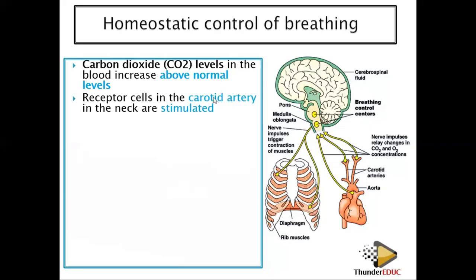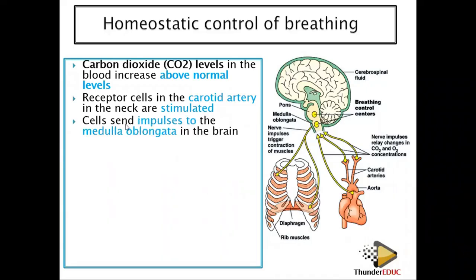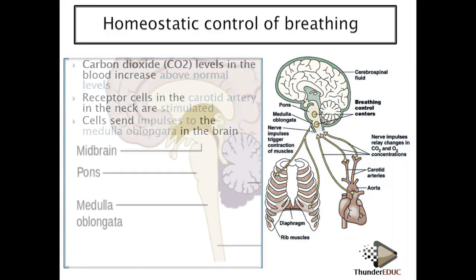The receptor cells in the carotid artery in the neck are stimulated. When blood carrying too much carbon dioxide passes the heart, the carotid artery sends an impulse to the brain. The blood becomes acidic due to high carbon dioxide. The carotid artery sends the impulse to the medulla oblongata, which then stimulates the breathing muscles.